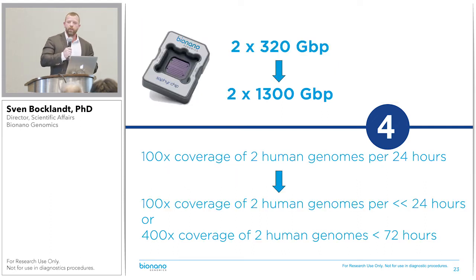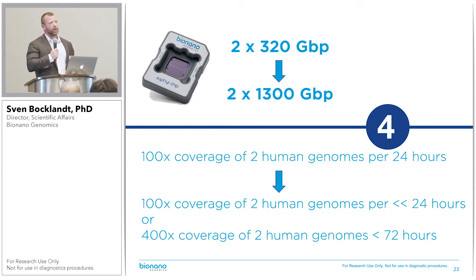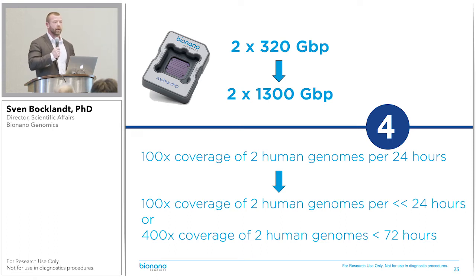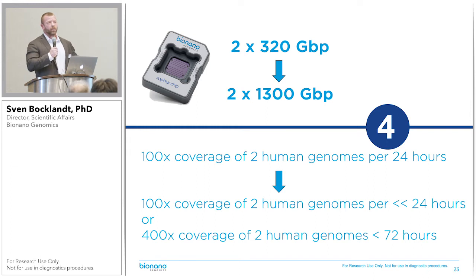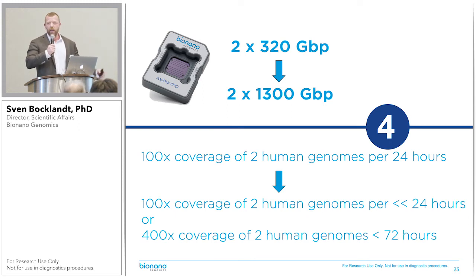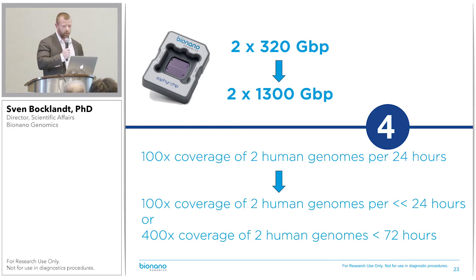We have a first generation of Sapphire as well that just takes two flow cells. This week we released an update to our instrument control software that allows it to also collect the 1.3 terabase pairs — it takes quite a bit longer, but functionally you can get that extremely deep coverage on our older instrument as well. It doesn't happen very often that lab instruments become better and faster as they age, but that's how we do this.